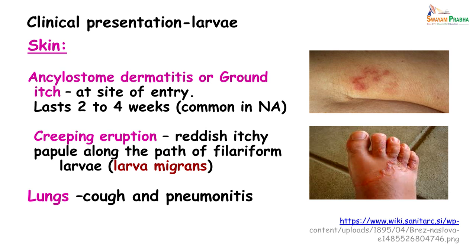Examining skin lesions, you get something called ankylostomiasis dermatitis or ground itch, which occurs at the site of entry and lasts for about 2 to 4 weeks. Although it is called ankylostoma dermatitis, it is more common with Necator infections. The next lesion the larvae can produce is called creeping eruption — reddish, itchy papules with a serpiginous appearance along the path of travel of the filariform larvae, also referred to as larva migrans.